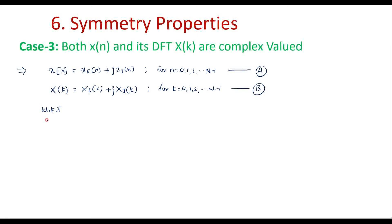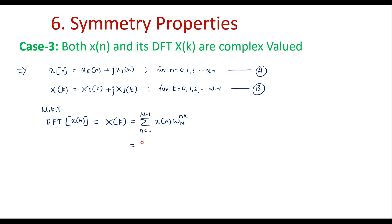We know that the DFT of any discrete signal x(n) is given by X(k) = summation from n=0 to N−1 of x(n)·W_N^(nk). Substituting the value of x(n) as the complex expression x_R(n) + j·x_I(n), we get the summation from n=0 to N−1 of [x_R(n) + j·x_I(n)]·W_N^(nk).